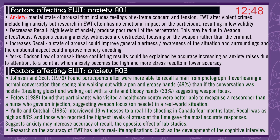Johnson and Scott in 1976 found participants were more able to recall a man from a photograph if overhearing a normal conversation and then seeing him walk out with a pen and greasy hands — 49% — than if the conversation was hostile, with breaking glass, and he walked out with a knife and bloody hands — 33% — suggesting weapon focus. In a real-world situation, Yuille and Cutshall in 1986 interviewed 13 witnesses to a real-life shooting in Canada four months later. Recall was as high as 88%, and those who reported the highest levels of stress at the time gave the most accurate responses, suggesting anxiety might increase the accuracy of recall — the opposite effect of lab studies.